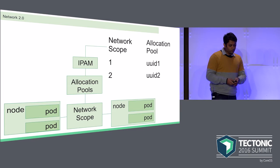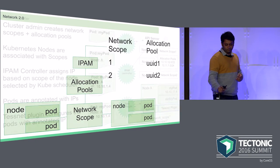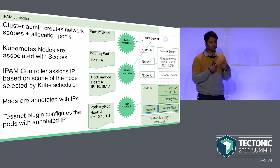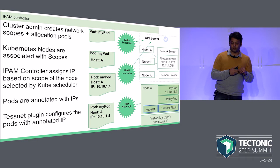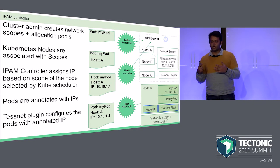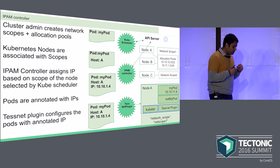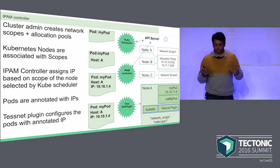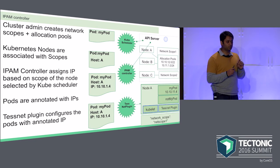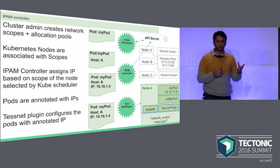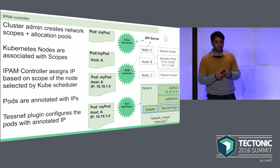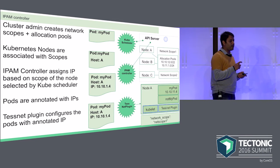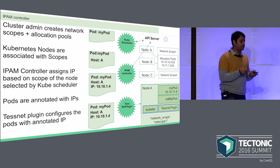Let's look at the flow of how it actually works. The cluster admin, before creating the cluster, creates these network scopes and associates them to allocation pools. Kubernetes nodes when booted are associated with these network scopes. When a pod is spun up, the kube scheduler places it on any node that has capacity. The IPAM controller, by looking at the pod, derives which network scope the pod lives in and allocates an IP out of the allocation pool associated with that network scope. Allocations are done as annotations on pods.